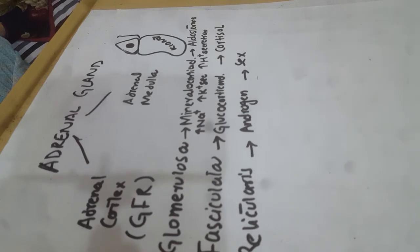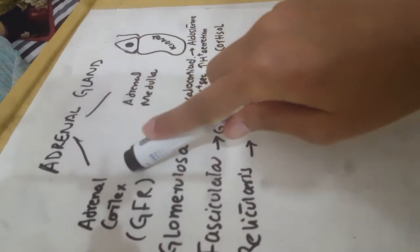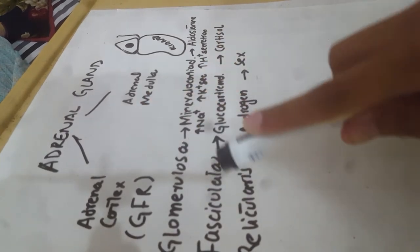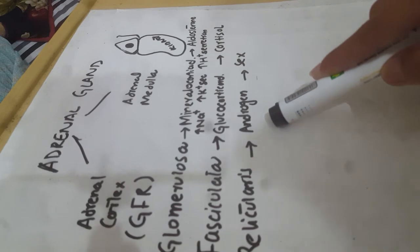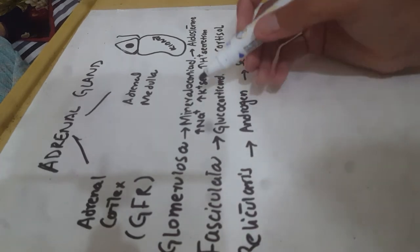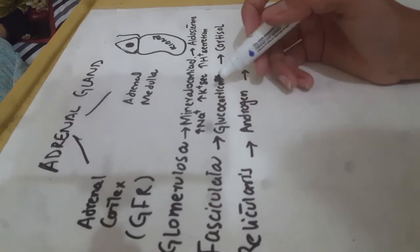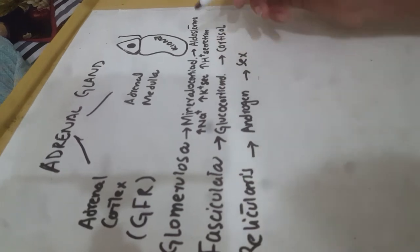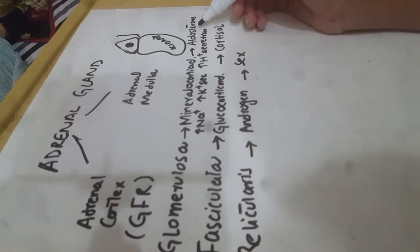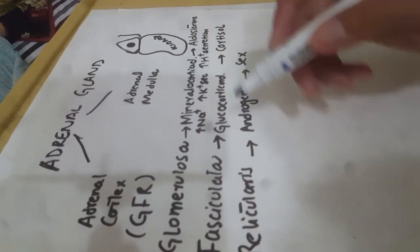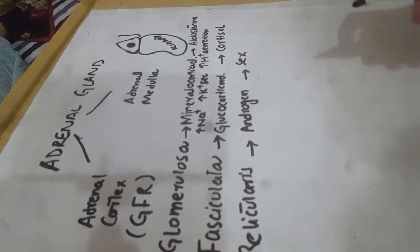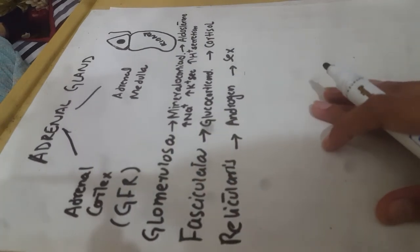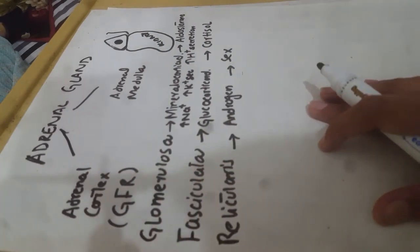Remember: we have three zones in the adrenal cortex — zona glomerulosa, zona fasciculata, and zona reticularis. First we have salt (mineralocorticoids), then sugar (glucocorticoids/cortisol, the stress hormone), then sex hormones (androgens). Mineralocorticoids maintain the balance of sodium, potassium, and hydrogen in our body via aldosterone.